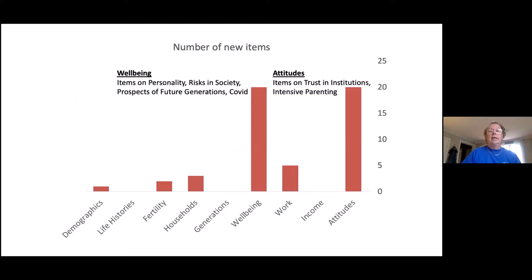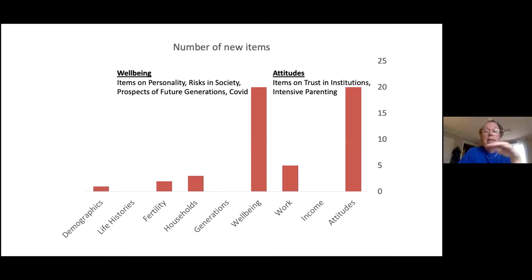We added a new section with questions mostly in the well-being and attitude sections, including questions on trust in institutions, intensive parenting, different risk factors in society, and COVID questions. On top of this, we also added retrospective histories on labor market attachments, derived from population registers, which are not included in this diagram.